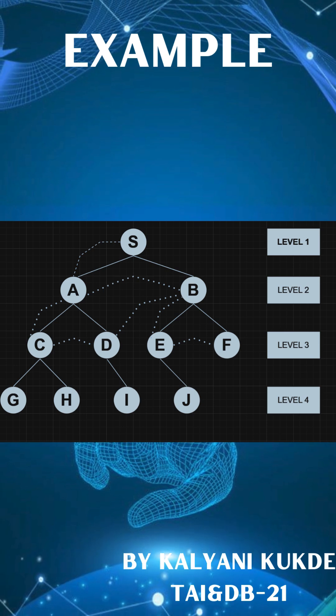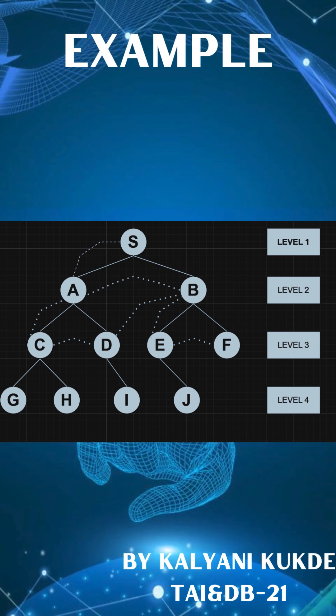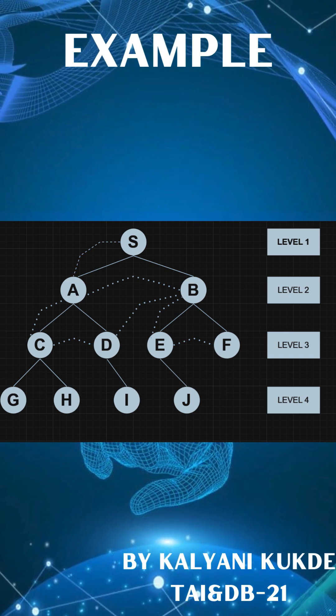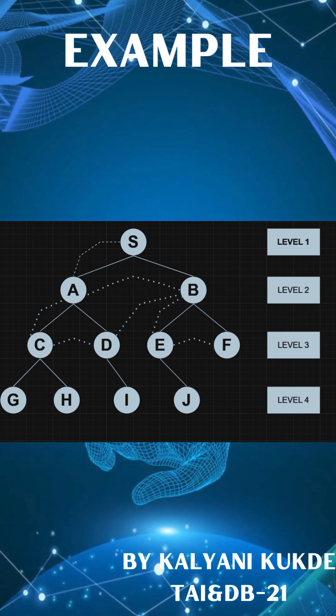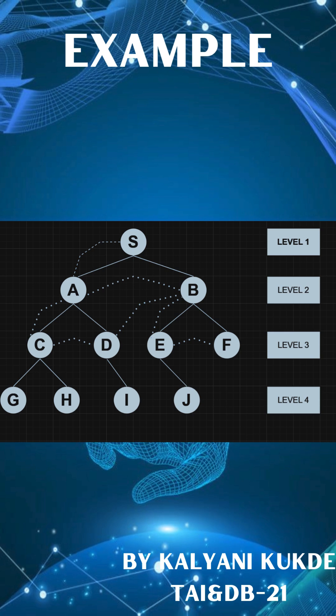For example, suppose the depth limit is set to level 2 and the goal node is node B. Applying DLS, it searches level 1 followed by level 2 and finds node B. Similarly, if we consider F as the goal node but set the limit of DLS to level 2 and search for nodes